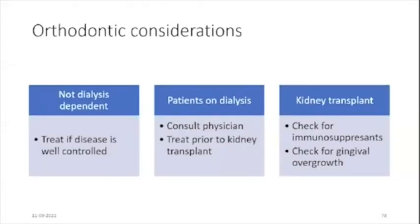Coming to the orthodontic considerations, there are three types of patients that may be referred for orthodontic treatment. First, patients with chronic renal failure who are not dialysis dependent — the patient's physician should be consulted and orthodontic treatment should be deferred if renal failure is advanced and dialysis is imminent. Second, patients on dialysis — usually on a waiting list for kidney transplantation. There is no major contraindication to orthodontic treatment in such patients, and it is better to treat them prior to kidney transplantation before immunosuppression causes gingival overgrowth.